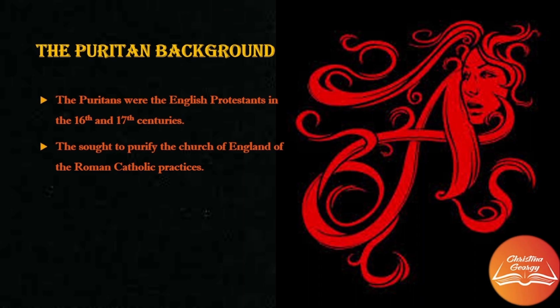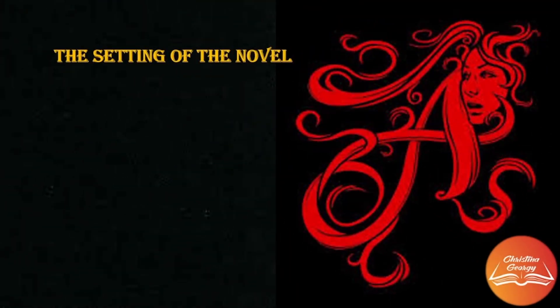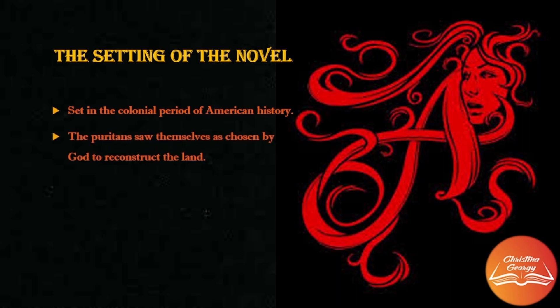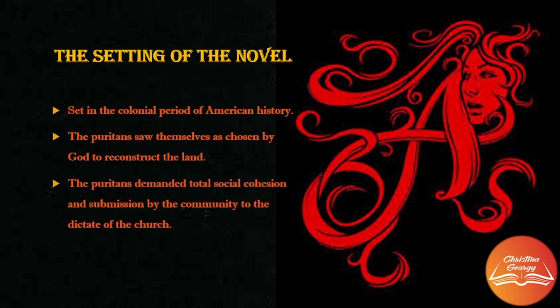Moving on to the setting of the novel: The Scarlet Letter is set in the colonial period of American history. Soon after Columbus discovered America, many European nations started to colonize the land. With the arrival of the Pilgrims and Puritans in the 1620s, the main settlement of Massachusetts began. The Puritans saw themselves as chosen by God to build a new Jerusalem in this virgin land, and in this task they demanded total social cohesion and submission by the community to the dictates of the Church.